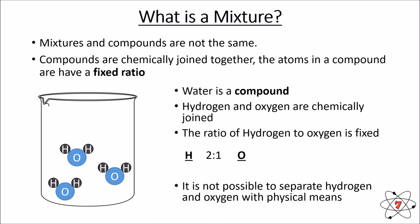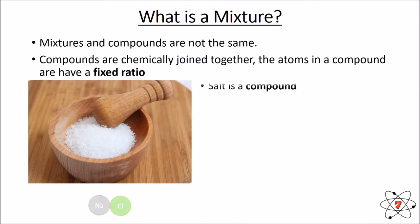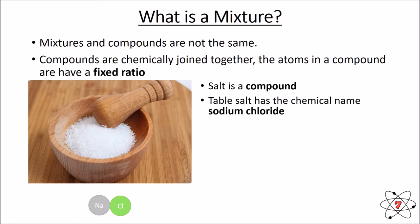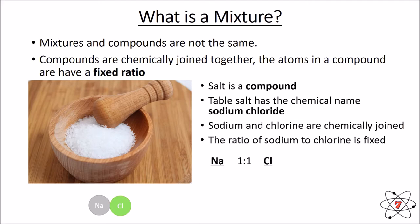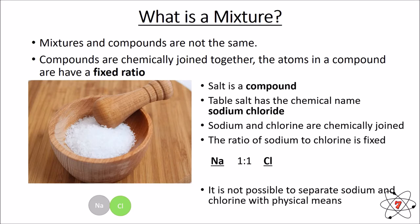In a compound it is not possible to separate the atoms from each other by physical means — only by chemical means, by chemical reactions. Here we have salt: table salt has the chemical name sodium chloride. Sodium and chlorine are chemically joined together and the ratio of sodium atoms to chlorine atoms is fixed at one to one. So again it is not possible to separate sodium and chlorine by physical means, only by chemical means. Water and salt are both very good examples of compounds.